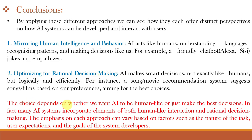The answer is that the choice depends on whether we want the AI system to be human-like or to simply make the best decisions. We use human-like systems such as Alexa, Siri, and Ok Google that can tell us a joke, and we also use rational systems such as song or movie recommendation systems that recommend content based on our preferences. In fact, many AI systems incorporate elements of both human-like interaction and rational decision-making. The emphasis on each approach can vary based on the nature of the task, user expectations, and the goals of the system developers, and AI systems may incorporate a combination of approaches as per the requirement.